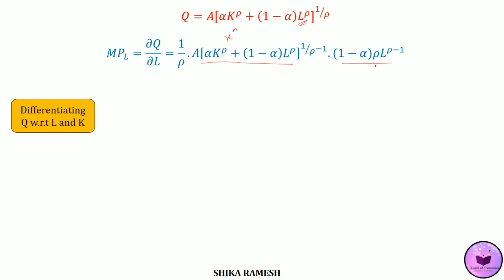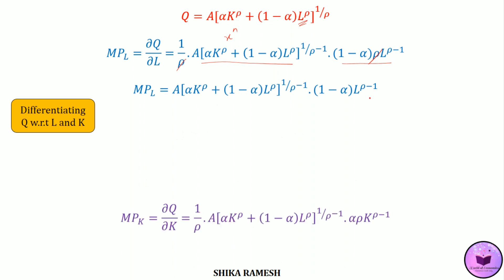Here rho and rho cancel out, and we get MPL equal to a times alpha k raised to rho plus 1 minus alpha l raised to rho, the whole raised to 1 by rho minus 1, multiplied by 1 minus alpha times l raised to rho minus 1.